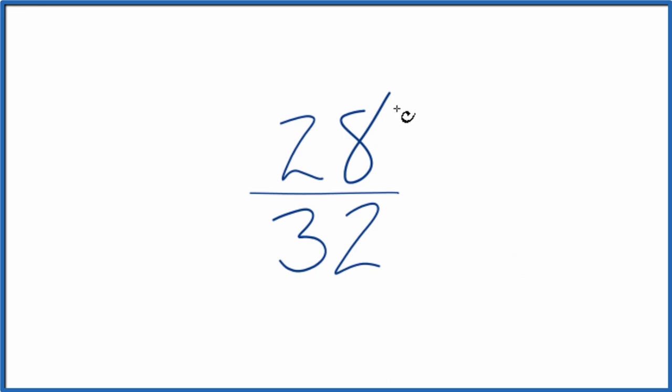So what we need to do is find a common factor, something that goes into 28 and 32 evenly. And we're looking for the greatest common factor.